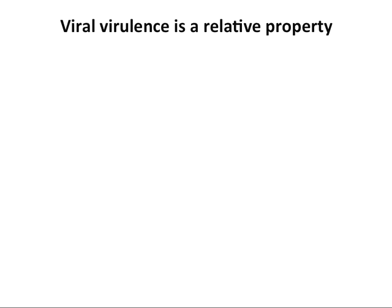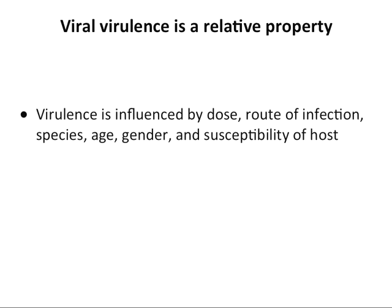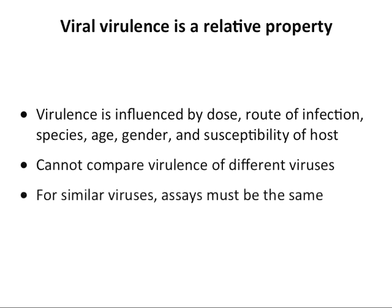It's very important to remember that virulence is a relative property. It's difficult to compare the virulence of HIV and polio because they use different experimental animals and different measurements. Virulence is influenced by dose, route of infection, species of the animal, age, gender, susceptibility, and many other things. Unless you're measuring the virulence of two viruses in exactly the same way, you really cannot compare them.